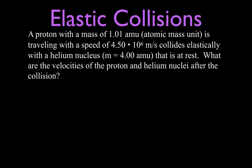In this case we have a proton. It has a mass of 1.01 atomic mass units. It's traveling with a speed of 4.50 times 10 to the 6 meters per second and it's going to collide elastically, so we'll say it's a perfectly elastic collision with a helium nucleus. The mass of that helium nucleus is 4.00 atomic mass units, and that helium nucleus is at rest. We want to know what are the velocities of the proton and the helium nuclei after the collision.